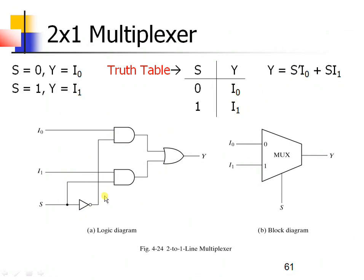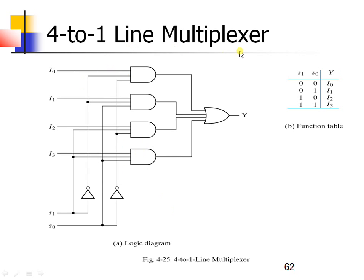This is how we design multiplexers with the help of logic gates. Now let us see one more example: the 4-to-1 line multiplexer, where 4 indicates the number of inputs and 1 indicates the number of outputs. As there are 4 inputs, it is 2^2 where N equals 2. Therefore a total of 2 selection lines are used to select any one of the input lines.